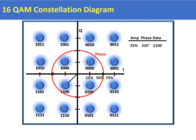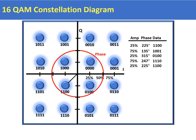The weaker the signal, the less well-defined the symbols are going to appear within the constellation. For example, with a 25% amplitude and a phase shift to 225 degrees, we have the symbol 1100. Change the amplitude to 75% and the phase shift to 135 degrees, and we end up with the symbol 1001, and so on. By changing the amplitude and changing the phase we generate new symbols, but remember — for 256 QAM you're going to need a very clean signal.